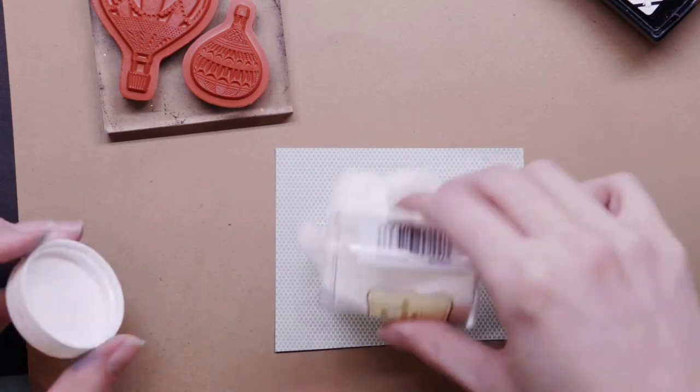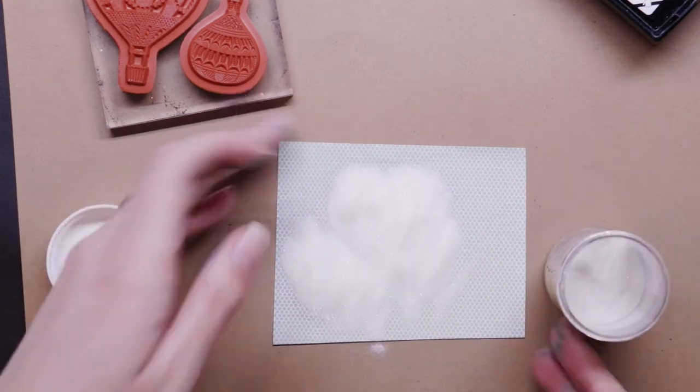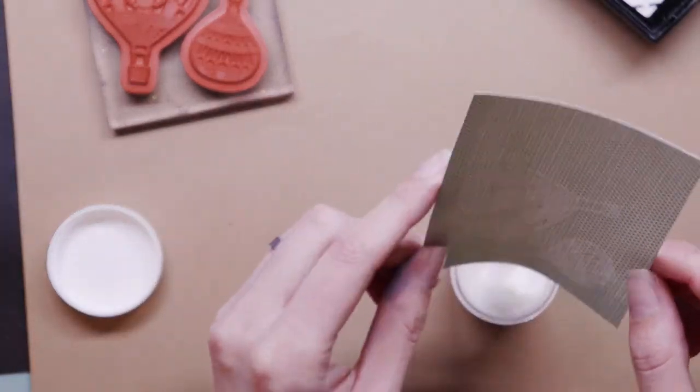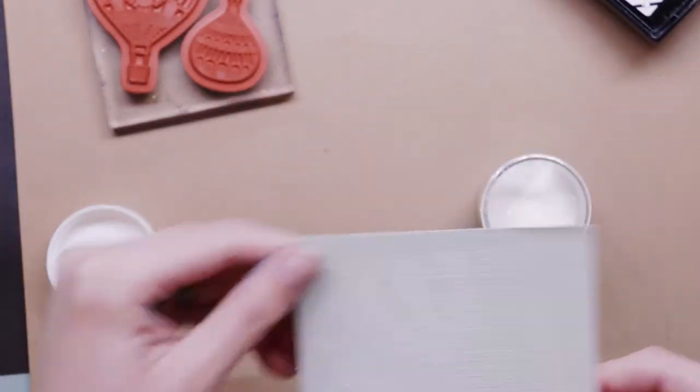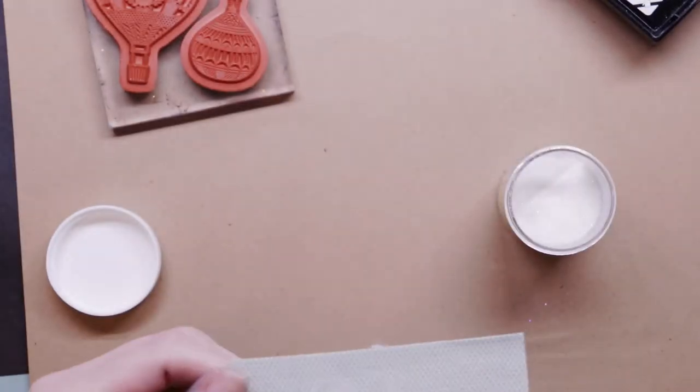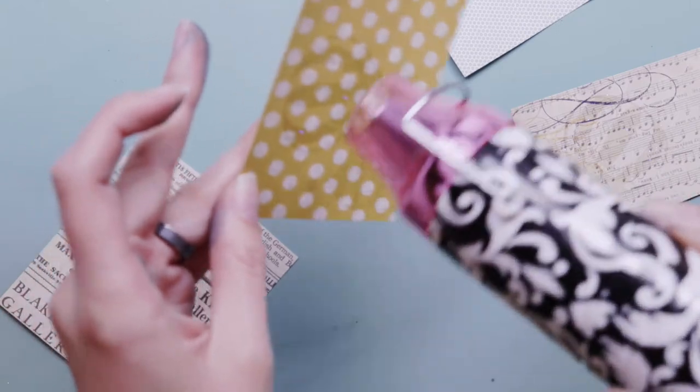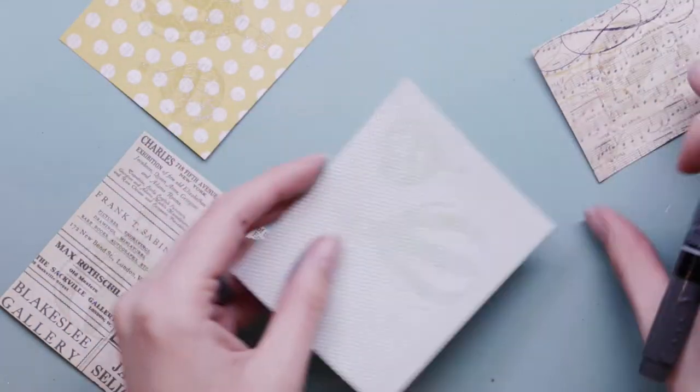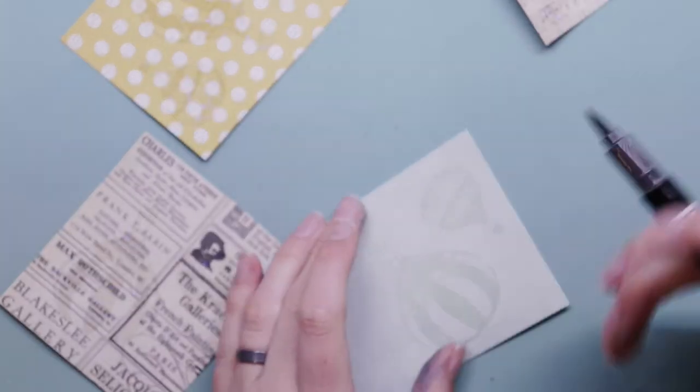I'm going to be using clear embossing powder. Now this one is sparkly, so I thought that would be kind of fun to try the sparkle one. So on this card, all of the clear embossing that I do will also have a little bit of a sparkle to it. After you've stamped and embossed, you can go ahead and heat set them.